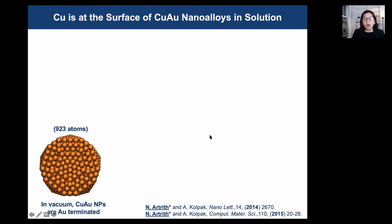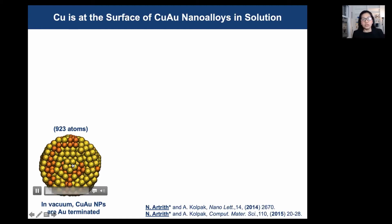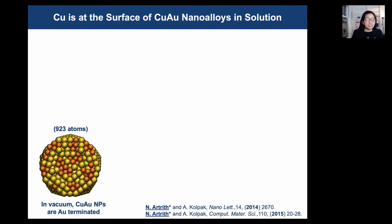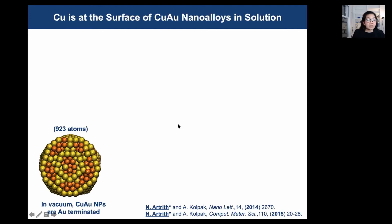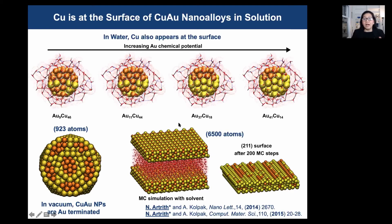Another example: copper-gold alloys are good catalysts for CO2 conversion, but only when they are synthesized in aqueous solution. We now understand why this is the case. Our Monte Carlo simulations show that copper-gold particles are gold-terminated in vacuum, but in water a mix of copper and gold is present at the surface. This is true for both nanoparticles and extended surfaces. The synthesis conditions are therefore also important for battery materials.